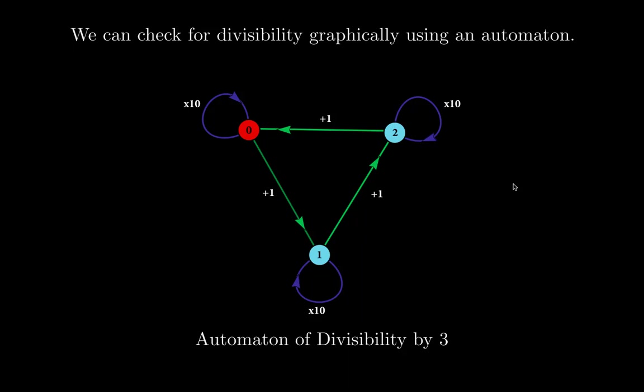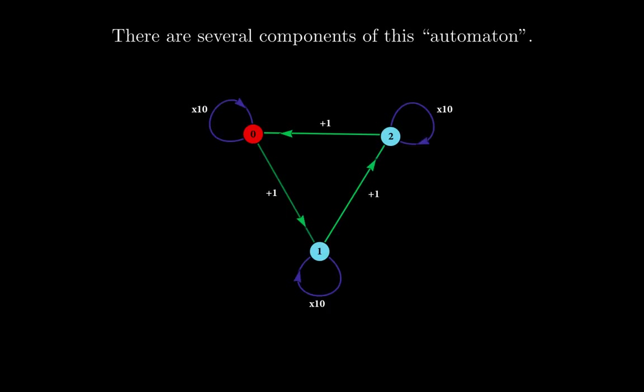Let's look at the different components and what they mean. This is the graphical representation of an automaton. It's basically a collection of nodes — 0, 1, 2 — and a collection of edges. These are the arrows that go from one node to another, and sometimes to itself.